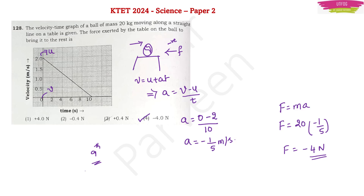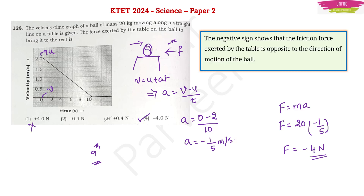In our previous video of science answer keys, we neglected the direction and gave 4 Newtons, which is a wrong answer. What you should keep in mind is that the negative sign shows that the friction force exerted by the table is opposite to the direction of motion of the ball. So this problem is clear now.